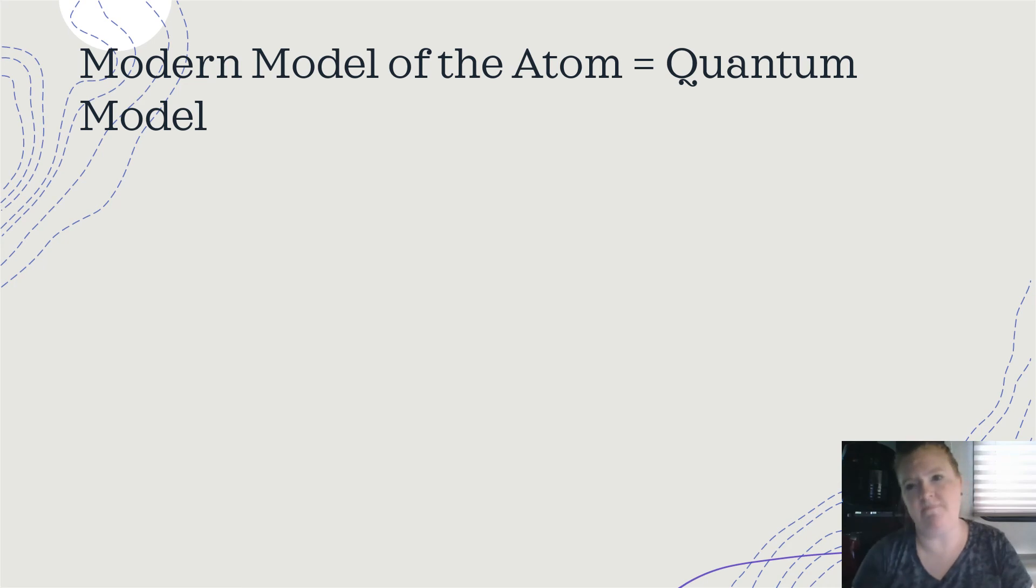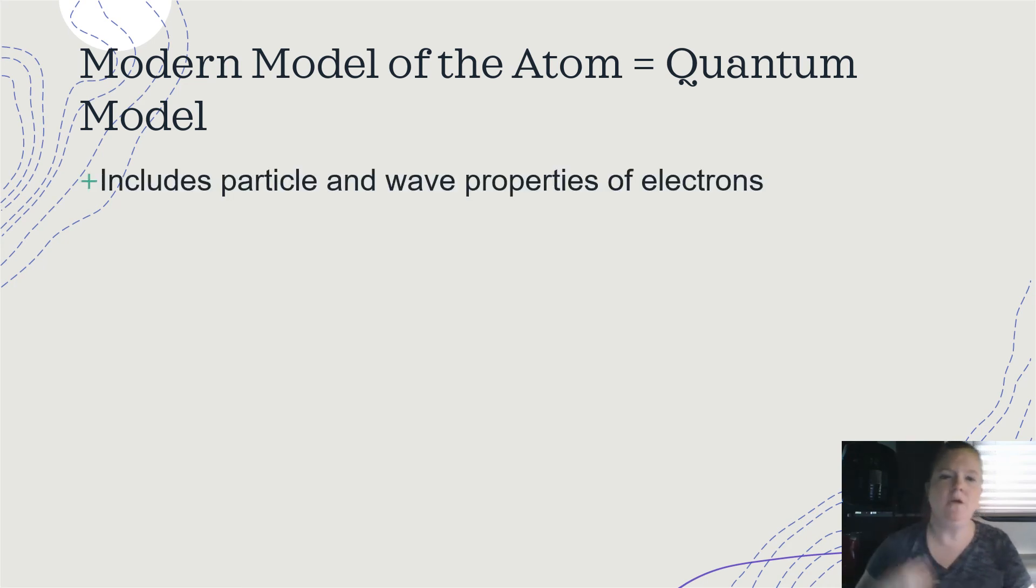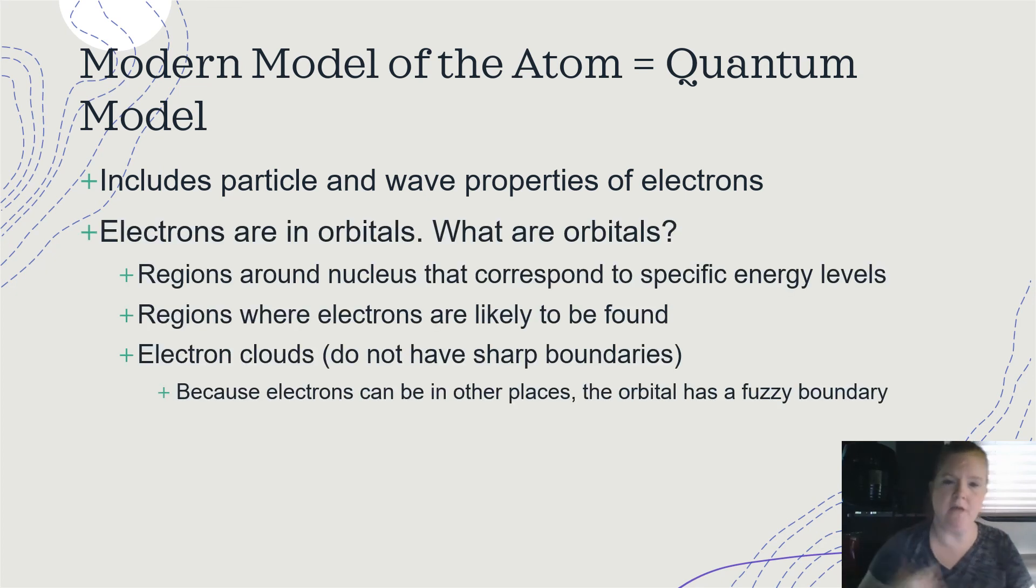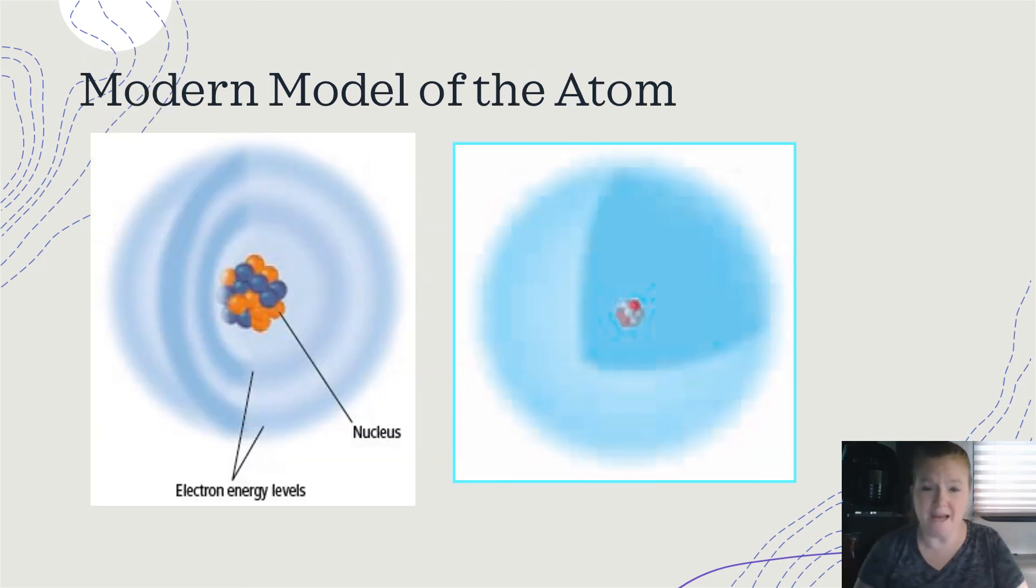The modern model of the atom is called the quantum model or quantum mechanical model. So it includes particle and wave properties of electrons. Electrons are in orbitals. So what are orbitals? Well, they're regions around the nucleus and they're like shapes that correspond to specific energy levels. They're regions where electrons are likely to be found. They're called electron clouds. So they don't have sharp boundaries. So you know when you look at clouds in the sky, the edges are kind of fuzzy. Orbitals or electron clouds are the same. Electrons can be in other places, so the orbital has a fuzzy boundary. So maybe the electrons there, maybe not. The interesting thing about this is we have a high probability of finding an electron in an orbital, but no guarantee. That's why the edges are fuzzy. Modern model of the atom. Again, fuzzy edges. The quantum model or quantum mechanical model.